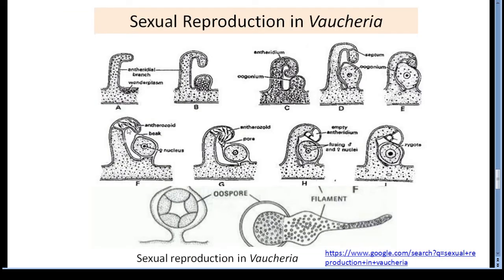Now we will see the sexual reproduction in Vaucheria. The sexual reproduction is oogamous. The male sex organ is called antheridium and the female sex organ is called oogonium. Most of the species are monoecious — they produce antheridia and oogonia on the same thallus. Antheridia are produced at the tip of a lateral branch. Each antheridium contains numerous chromatophores and nuclei; a mature antheridium is green in colour. The antheridium is slender, hook-like and has a pore at its distal end. It is separated from the lower stalk by a septum.